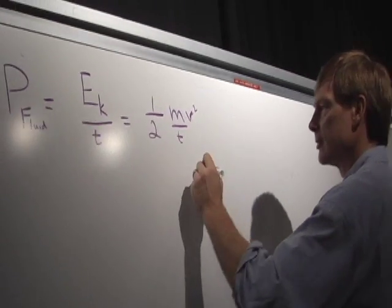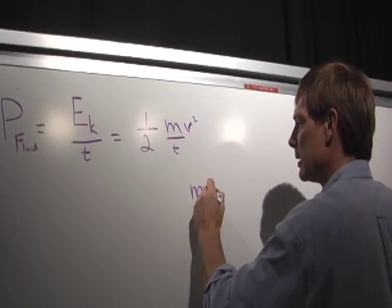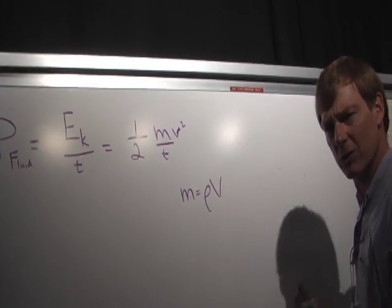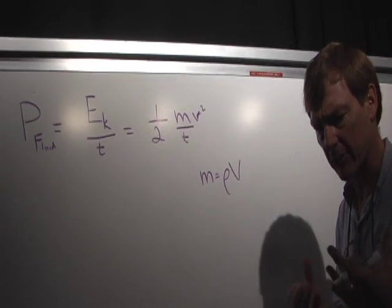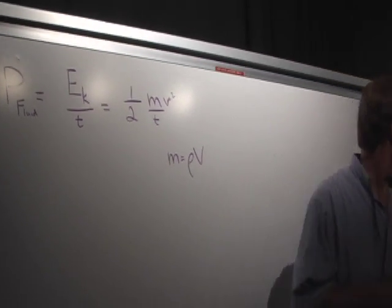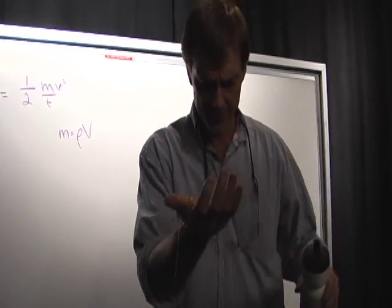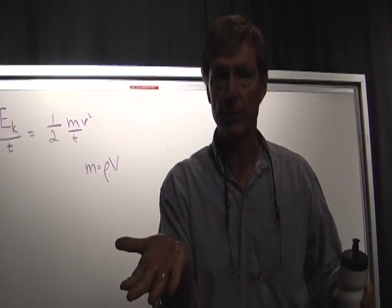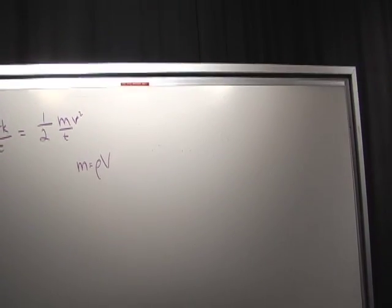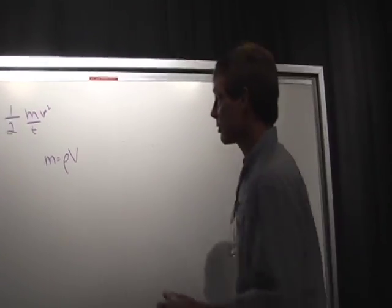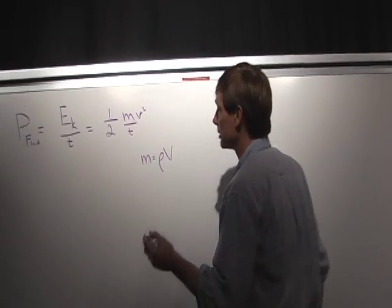Now, mass is mass density times volume. Because when we're talking about a fluid, we don't usually, it's hard to measure the mass. For example, if I want 3 ounces of water, it's just hard to hold it still. So we usually talk about the density of the water, or any fluid, and the volume we have. So mass is mass density times volume. Easier to measure.